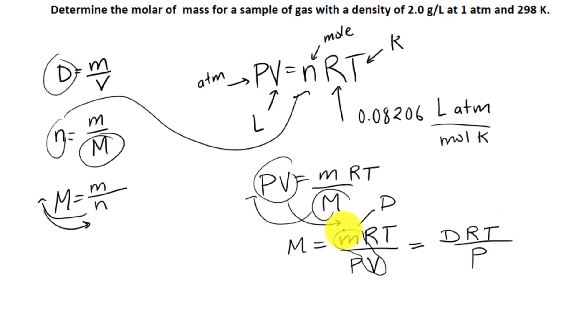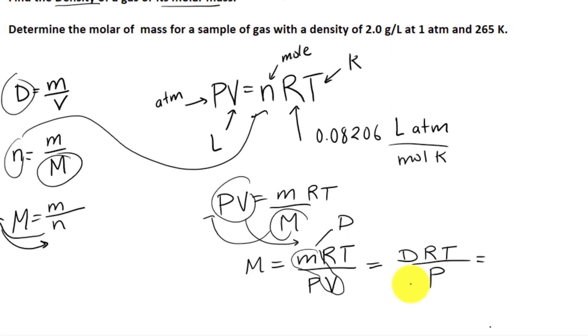So know this equation and know how to manipulate it so that you can find the density or the molar mass of the substance using the ideal gas law. Let's apply this new equation with density to find the molar mass. Determine the molar mass for a sample of gas with a density of 2 grams per liter at 1 atm and 265 Kelvin.